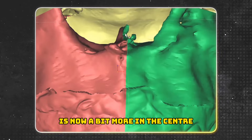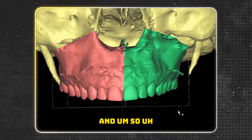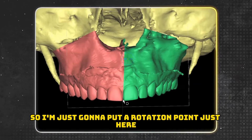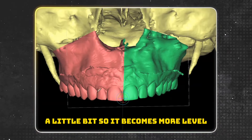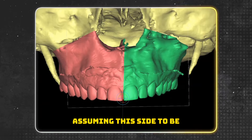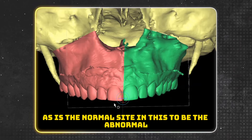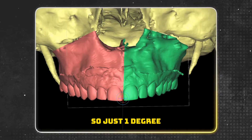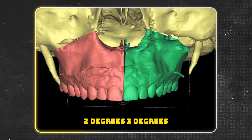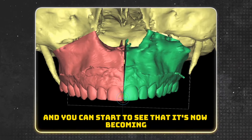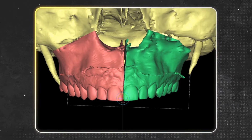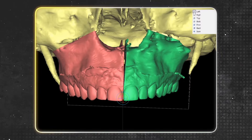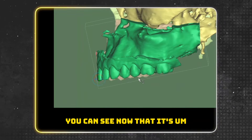I'm taking off the grid. This is called the Le Fort line — we'll be operating predominantly where you've already had surgery. The first thing I do is move the upper jaw incrementally to the right: half a millimeter, one millimeter, one and a quarter millimeters. Now you can see the dental midline is dead on, and the nasal spine is more in the center. This side is obviously up, so I'm placing a rotation point and rolling it — one degree, two degrees, three degrees — it's becoming more level.